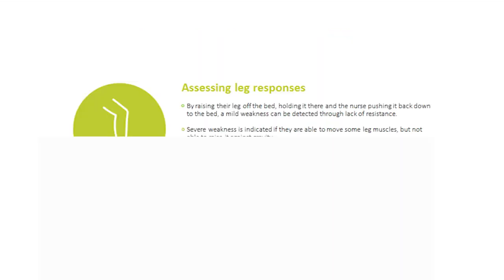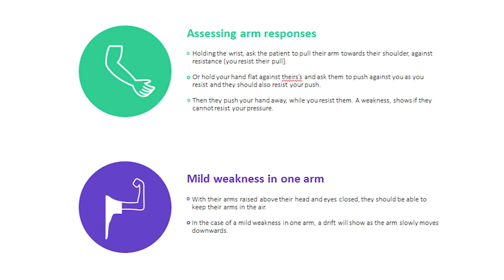Assessing Arm Responses — holding the wrist, ask the patient to pull their arm towards their shoulder against resistance, and you resist their pull. Or hold your hand flat against theirs and ask them to push against you as you resist; they should also resist your push. A weakness shows if they cannot resist your pressure. With arms raised above their head and eyes closed, they should keep their arms in the air — in the case of a mild weakness in one arm, a drift will show as the arm slowly moves downwards.